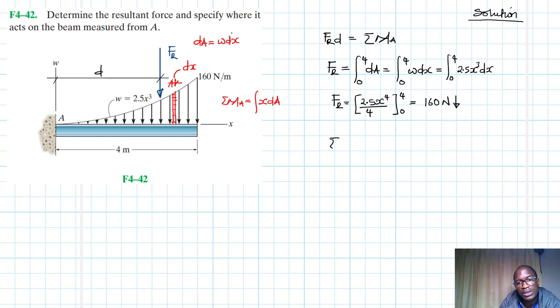We are saying summation of moments about point A with clockwise being our reference. This is going to be equal to integral from 0 to 4 of x dA. This is equal to integral from 0 to 4 of x times 2.5x³ dx, which is just equal to integral from 0 to 4 of 2.5x⁴ dx.